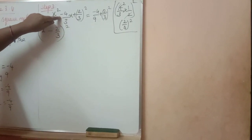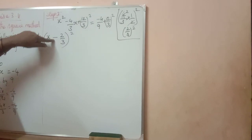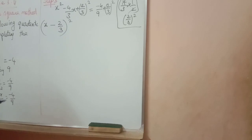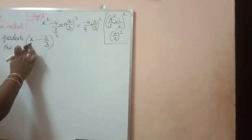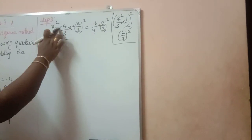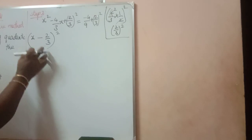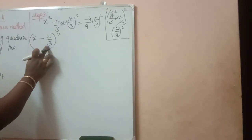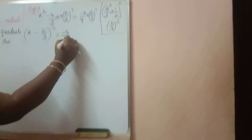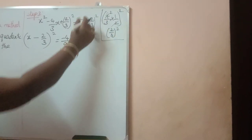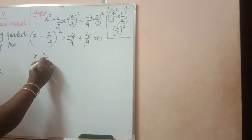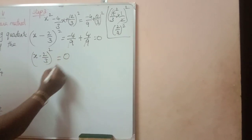From the first term, square root gives x. Last term, square root gives 2 by 3. Sign of x: if it is plus, write plus here; if it is minus, write minus here. If you have doubt, you can expand using a minus b the whole square formula and verify. Right-hand side: minus 4 by 9 plus 2 squared over 3 squared, which is 4 by 9. So these two will be cancelled — it is equal to 0. So x minus 2 by 3 the whole square is equal to 0.